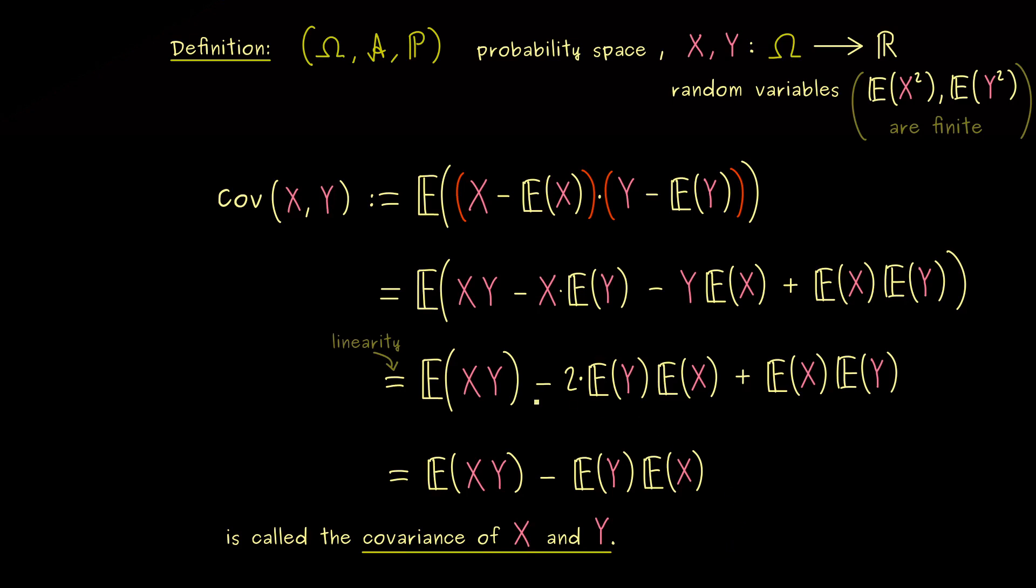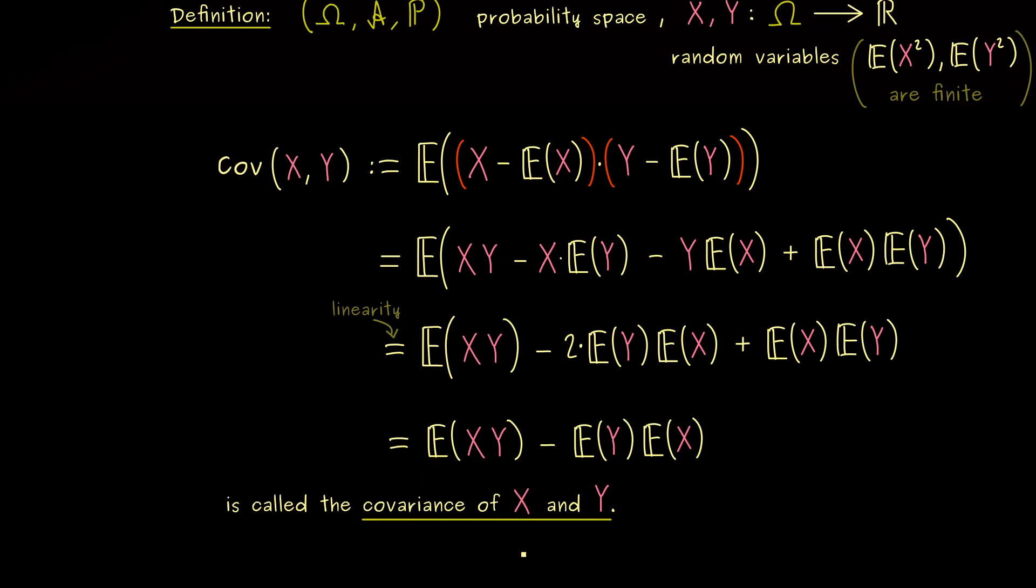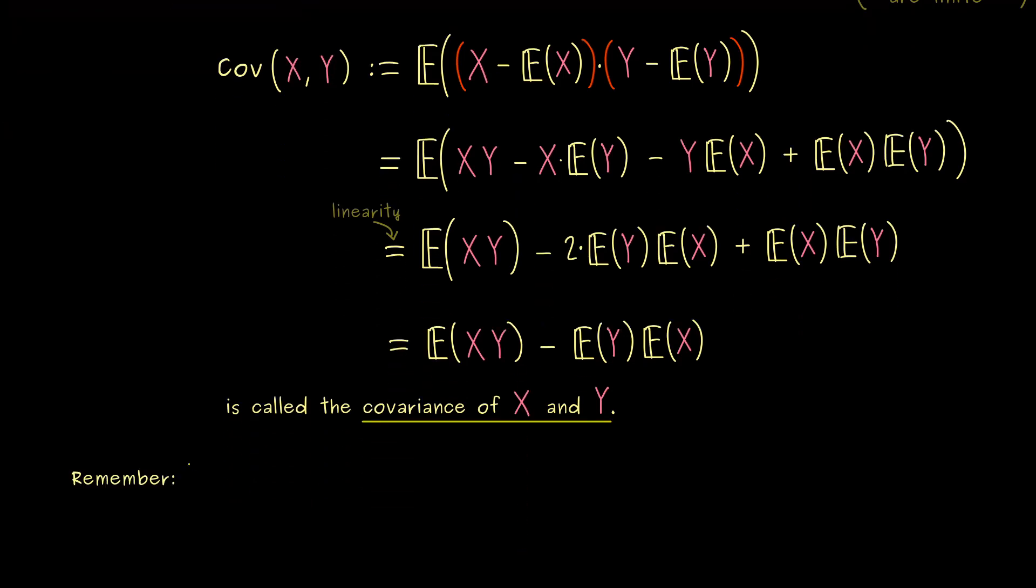And moreover, this definition shows you, that the covariance measures how close the two variables X and Y are to independence. This makes sense, because we already know, what independence means for the expectations.